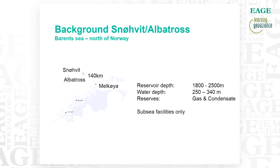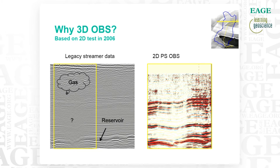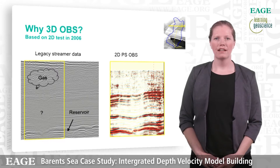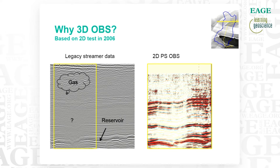The Snøvit Albatross field is located north of Norway. It is a gas and condensate field and the water depth is around 300 meters and the reservoir depth is around 2000 meters. The 3D OBS was acquired based on a 2D feasibility test in 2006. The image to the right shows the PS data, which has successfully imaged below a gas cloud.